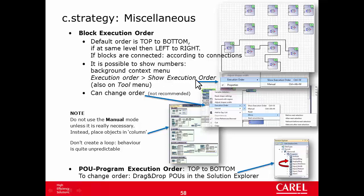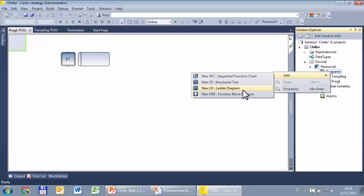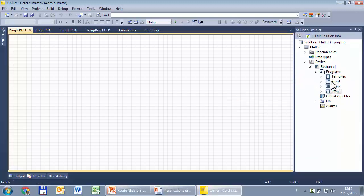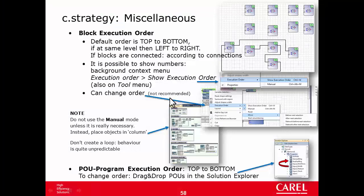What I told you regards the blocks of a given POU, given page, but what about the POUs in a given application? The POUs are executed from top to bottom, like in OneTool, according to the sequence here in the solution explorer. For example, if I create a new POU, the execution order will be from top to bottom. You can easily change the sequence with a simple drag and drop. Drag and drop at the end. Well, this is all regarding the block execution order.